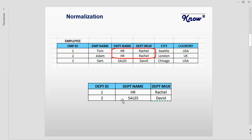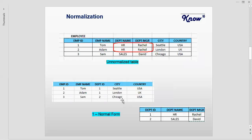Now what happens to my original table and how do I avoid the repetition of data there? Once I have created this new department table with a primary ID that identifies each department, I can just reference this primary key in my original table. I can remove the department name and department manager columns and just put the department ID column instead. This reduces storage requirements because now I am not repeating 'HR, Rachel' again and again in this table.